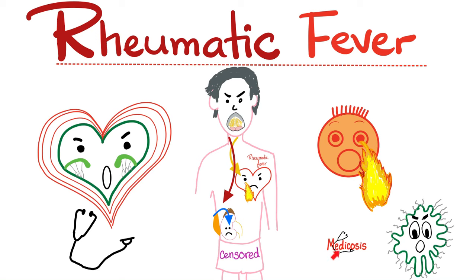Hello, wonderful people! It's Medicosis Perfectionist, where medicine makes perfect sense. Welcome back to my cardiology playlist. In previous videos we talked about diseases of the pericardium such as acute pericarditis, pericardial effusion, and chronic constrictive pericarditis. We also talked about diseases of the myocardium such as myocardial infarction, cardiomyopathy with all its subtypes, and myocarditis.